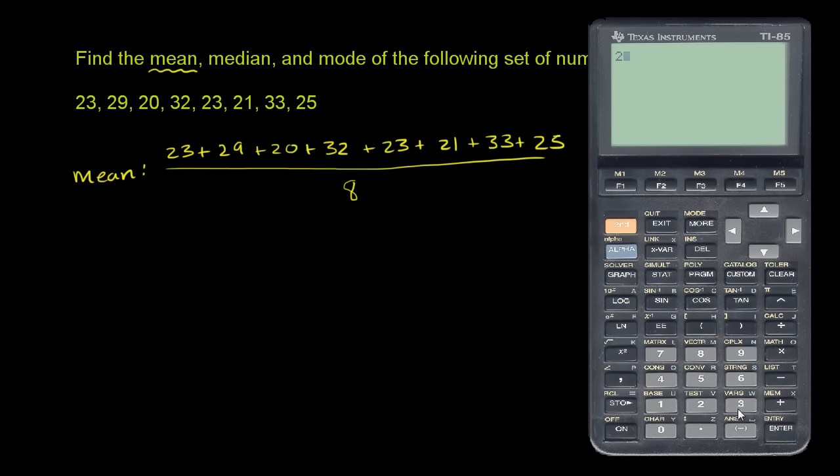So we have 23 plus 29 plus 20 plus 32 plus 23 plus 21 plus 33 plus 25. The sum of all the numbers is 206.